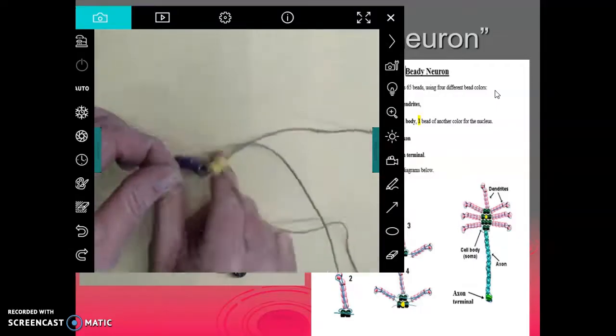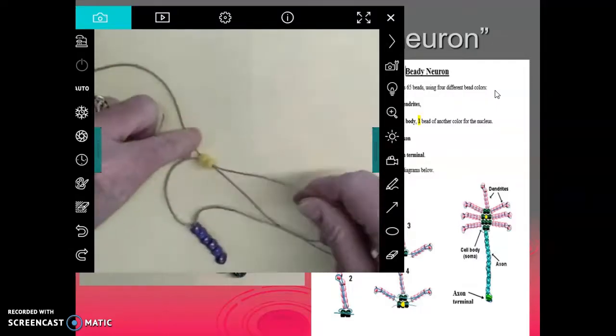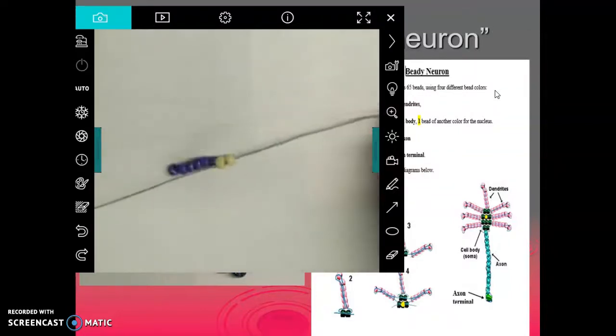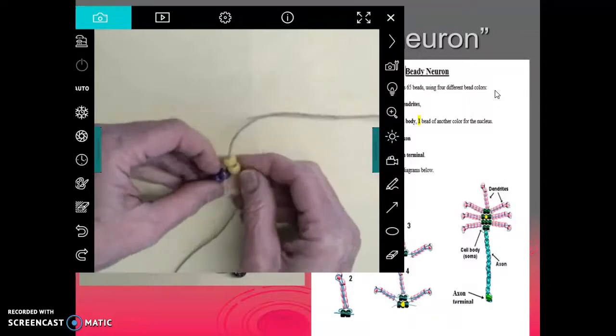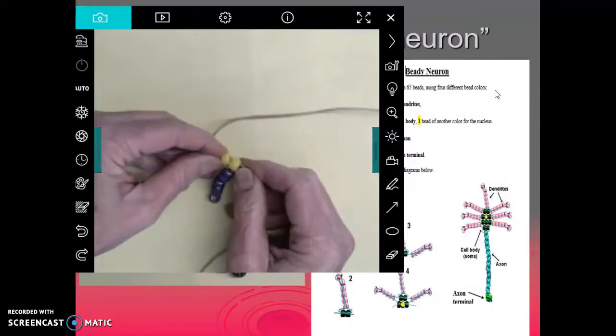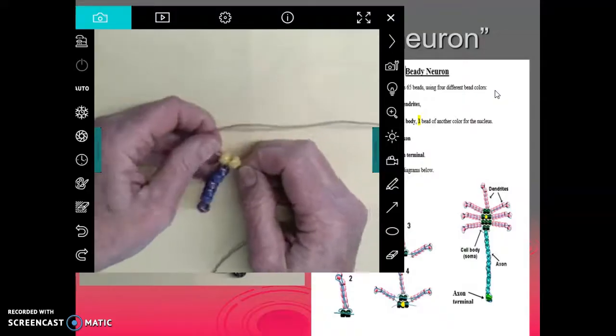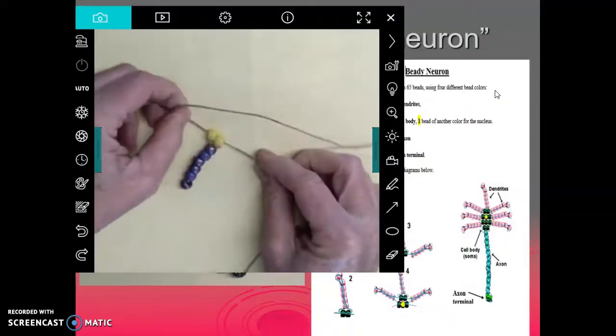And then what you do is you pull all the way down with your two strings. So grab them both like this and pull all the way down. And when you pull it all the way down, you just need to make it perpendicular. So keep pulling and moving until those two beads are perpendicular.